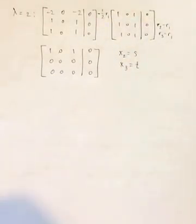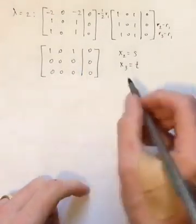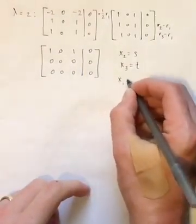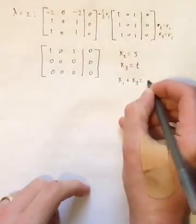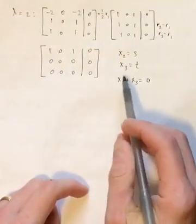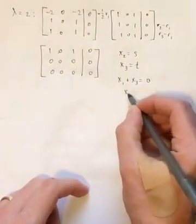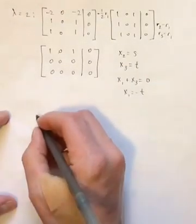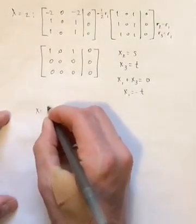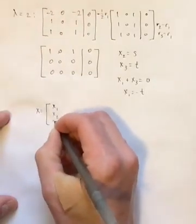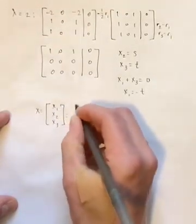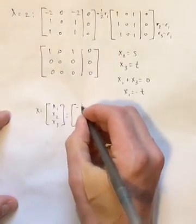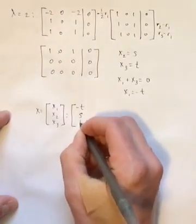They're free, so we just set them equal to some parameter. And then this equation on the top becomes x1 plus x3 equals 0. Well, x3 is t, so x1 is going to be negative t. So our solutions then for the vectors x1, x2, x3, is going to be negative t, s, t.